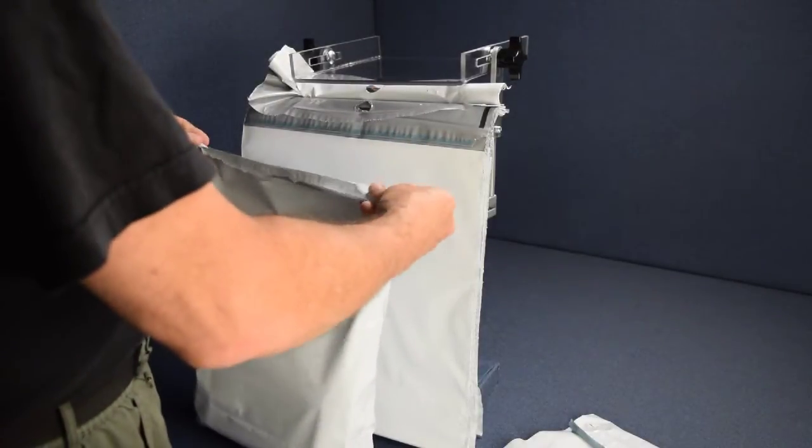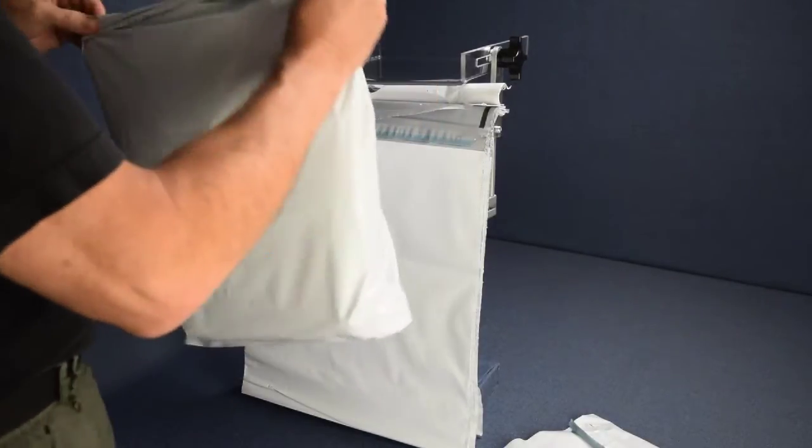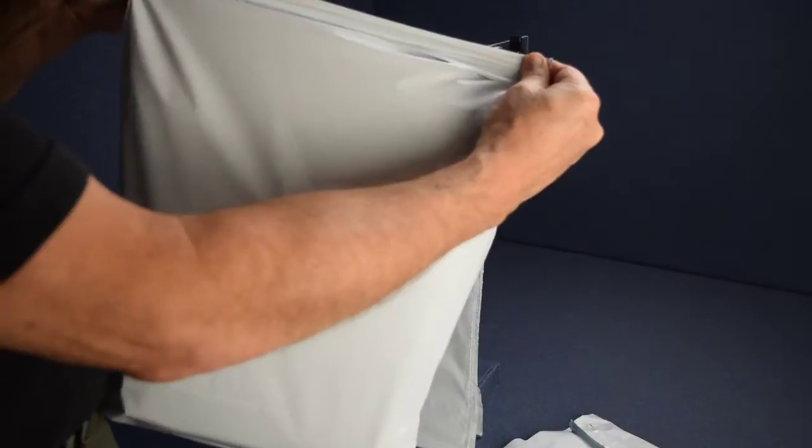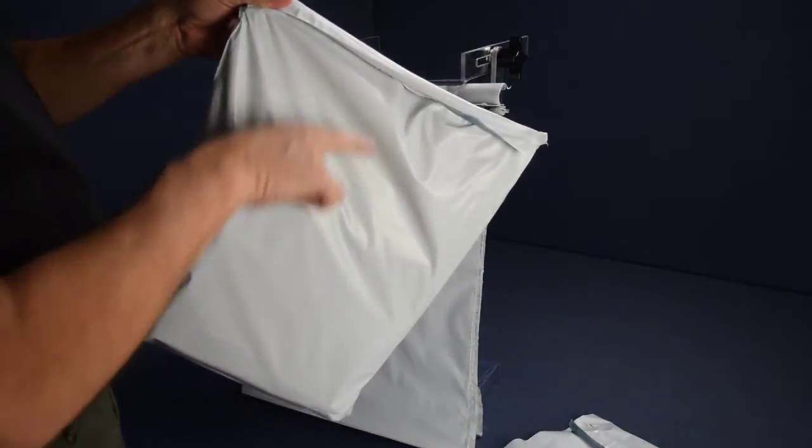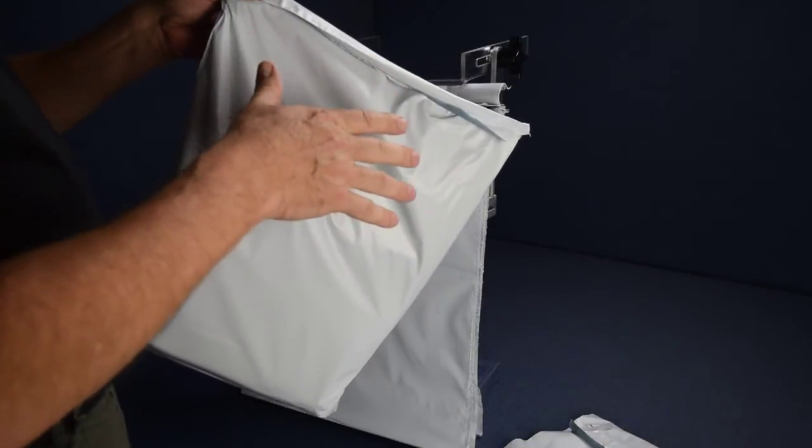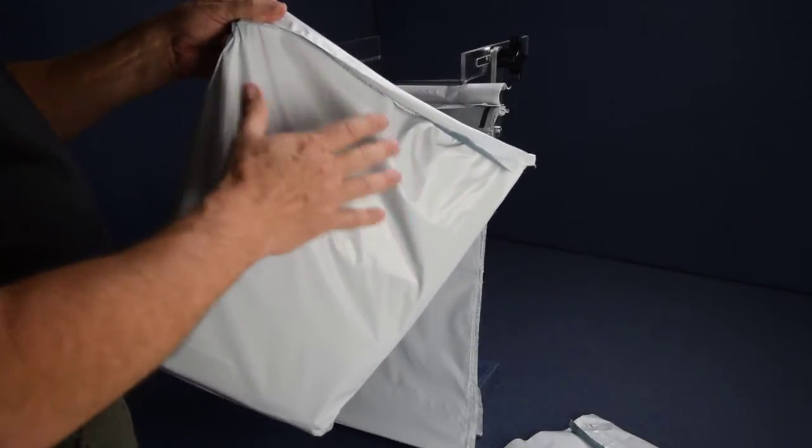Fold the lip of the bag over and seal to the outside of the film anywhere on there. So you have a sturdy permanent seal and the seal position can be adjusted up or down on the bag according to the fill level of the contents in the bag.